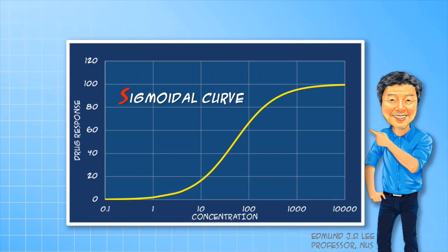In the upper and lower concentration ranges, the drug response is quite insensitive to big changes in concentrations. In the uppermost range, we see that the response cannot go higher because it is already at its maximum.